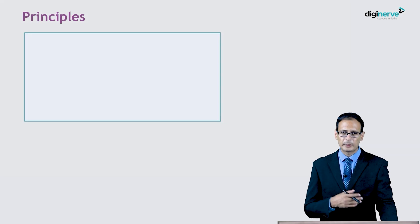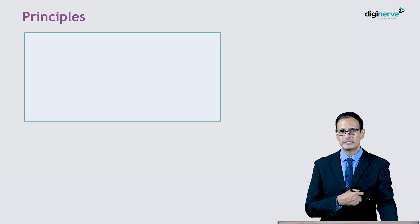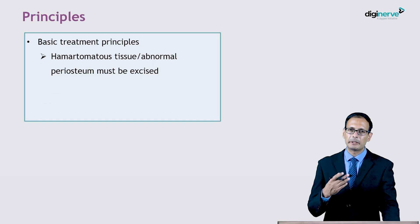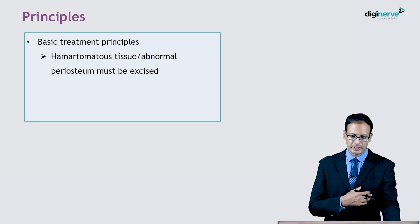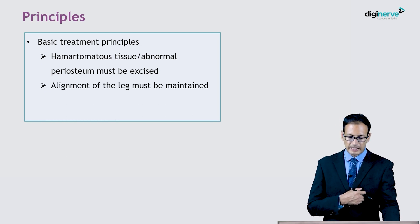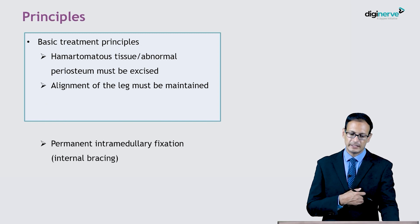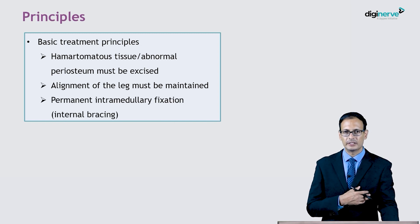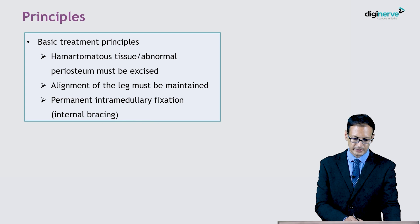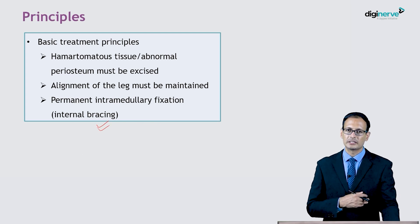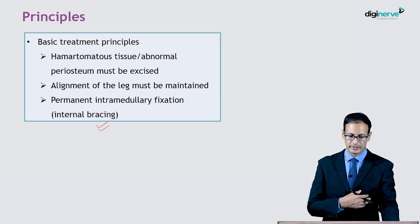What are the principles of treatment to achieve these aims? The basic treatment principles include hamartomatous tissue or abnormal periosteum excision, alignment of leg to be maintained along with permanent intramedullary fixation to provide internal bracing so that the chances of refracture are avoided.